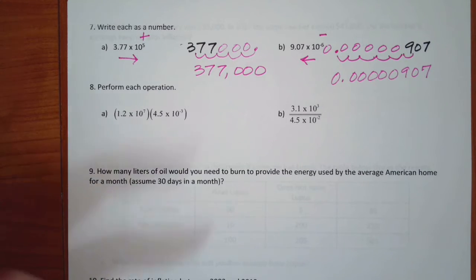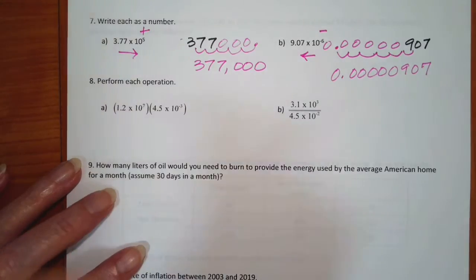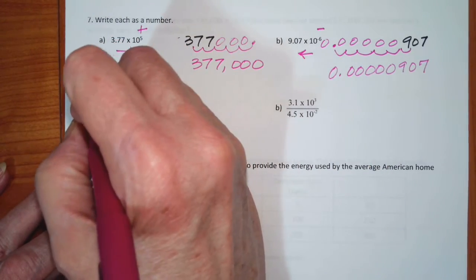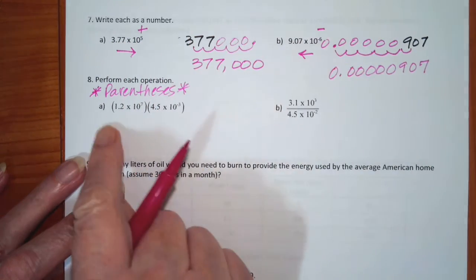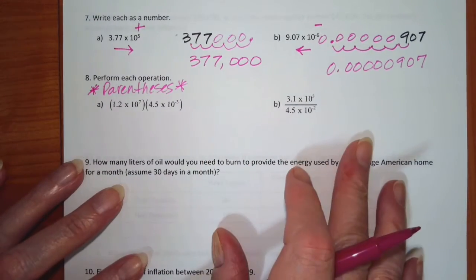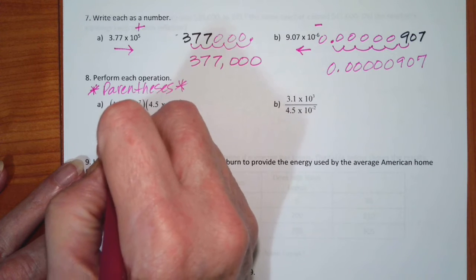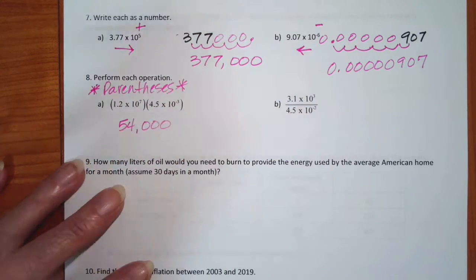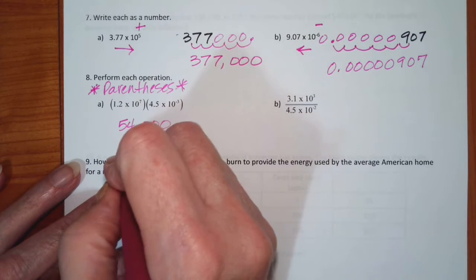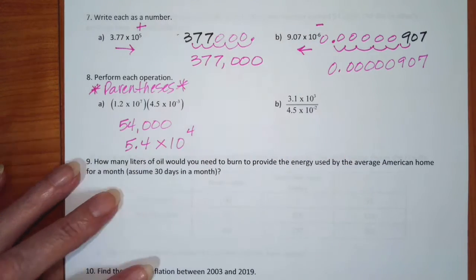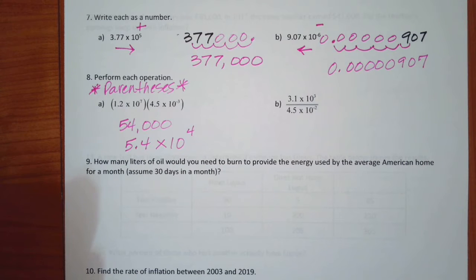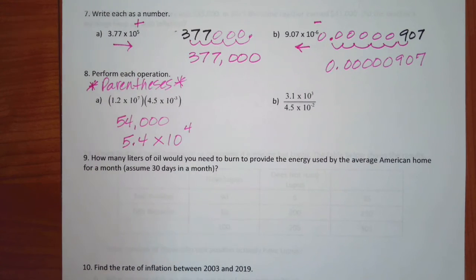To perform operations, if you're multiplying you can just go for it — use parentheses, make a note to remember the parentheses. If you do this in your calculator it depends on what mode you're in. You'll get 54,000 in number mode, or 5.4 times 10 to the 4th in scientific notation mode. On the test, follow the instructions about which form to use. If it doesn't say, either is fine.